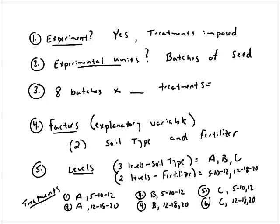So you have three levels for soil type, two levels for fertilizer. Those are your two factors. And you do all the combinations of those levels within the factors, and that gives your treatments. And we have six treatments. So let's go back up to number three. Eight batches of seed times six treatments. We need 48 batches of seed. That's how many experimental units I need.